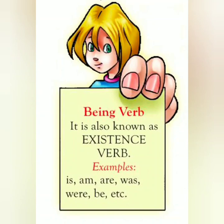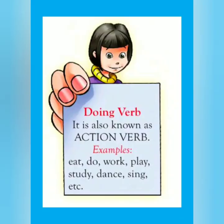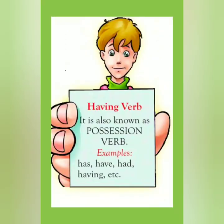Examples of being verb: is, are, am, was, were. For example in a sentence: 'I am a student.' Doing verb is also known as action verb. It denotes the action done by the subject of a sentence. Examples: eat, do, work, play, study, dance, sing, etc. For example: 'Farmer works very hard.'